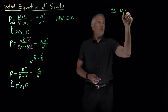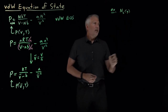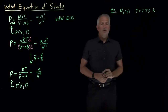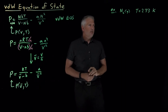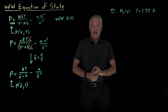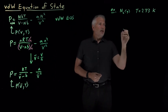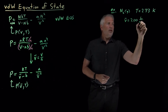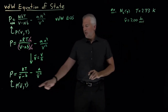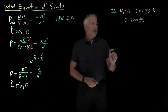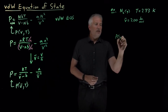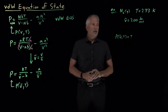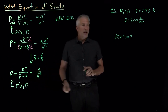Let's take a fairly ordinary gas — nitrogen gas — at 273 Kelvin, standard temperature, because we know a bit about ideal gases at standard temperature and pressure. If the molar volume of this gas is two liters per mole, I've given you the V-bar and T needed to calculate the pressure. The question is: what is the pressure of this gas under these conditions? To do that, I also need to tell you the values of the A and B constants.